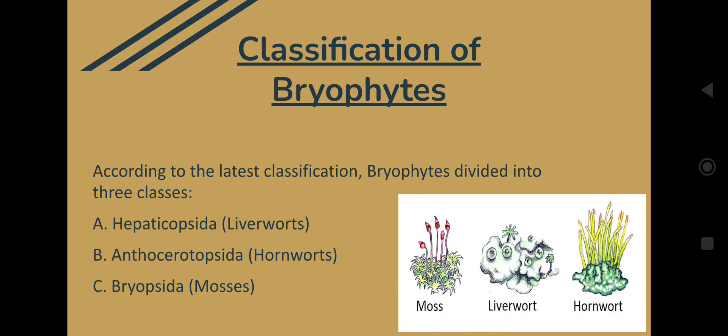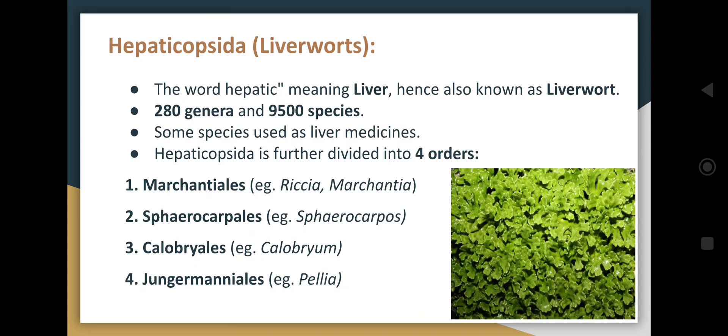Bryophytes are the non-vascular land plants, also known as amphibians of plants because they require both water and soil for their survival. The classification of bryophytes involves three classes: Hepaticopsida, Anthocerotopsida, and Bryopsida. This video deals with Hepaticopsida.